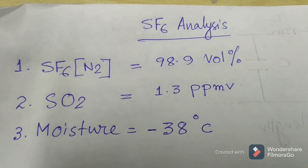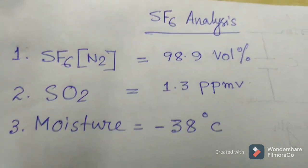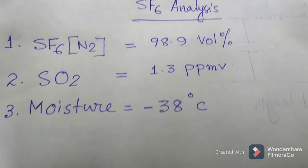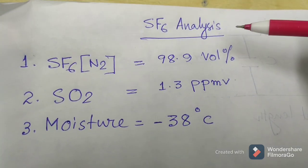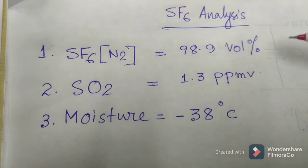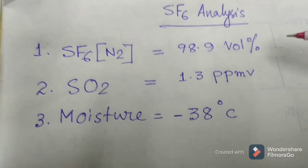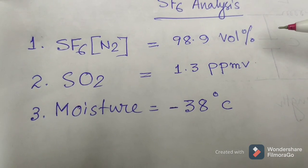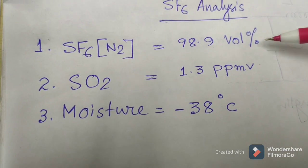So first of all, what is SF6 analysis? SF6 analysis is for analyzing the condition of the SF6 gas that has been inside the interrupter as the arc quenching medium.